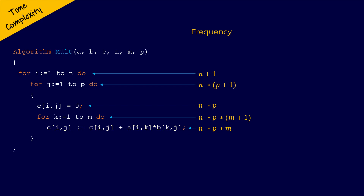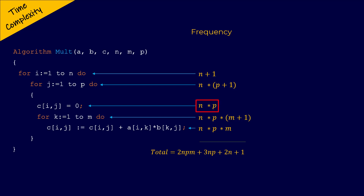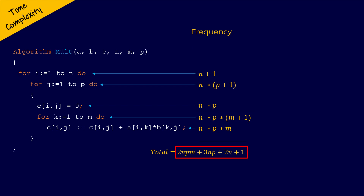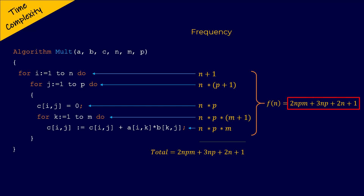The step count of the entire algorithm will be N plus 1, plus N multiplied by P plus 1, plus N multiplied by P, plus N multiplied by P multiplied by M plus 1, plus N multiplied by P multiplied by M, which simplifies to 2N multiplied by P multiplied by M plus 3N multiplied by P plus 2N plus 1. The number of operations needed to execute an algorithm is represented as a runtime function f of N, so the runtime function f of N for this algorithm is 2NPM plus 3NP plus 2N plus 1.